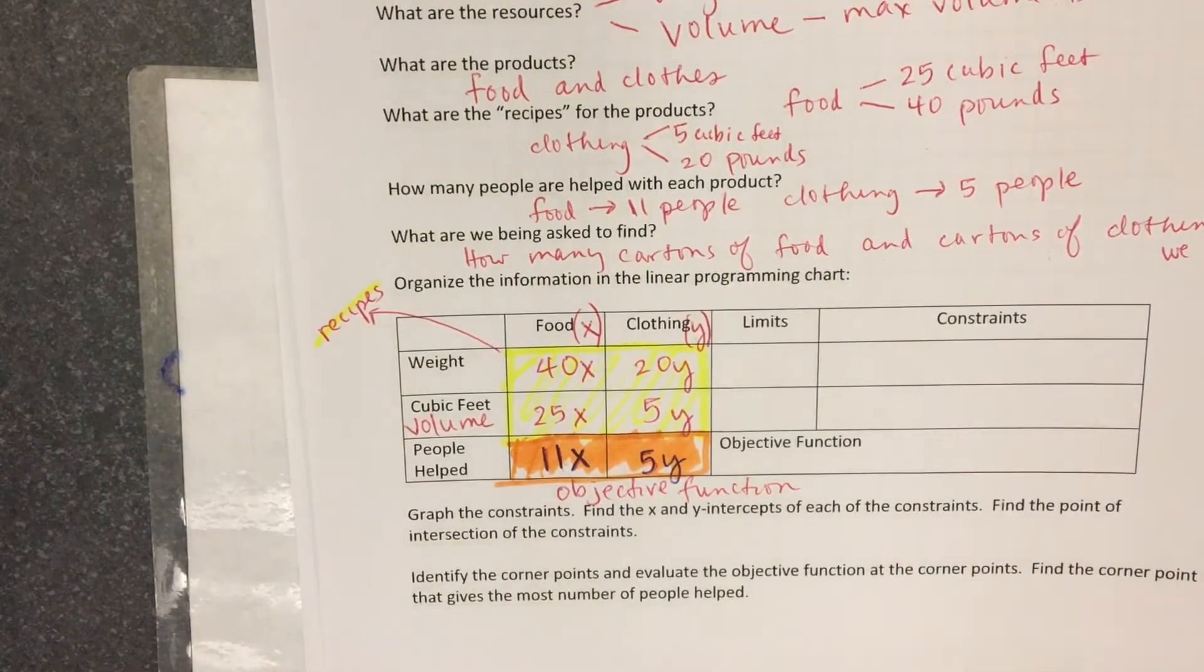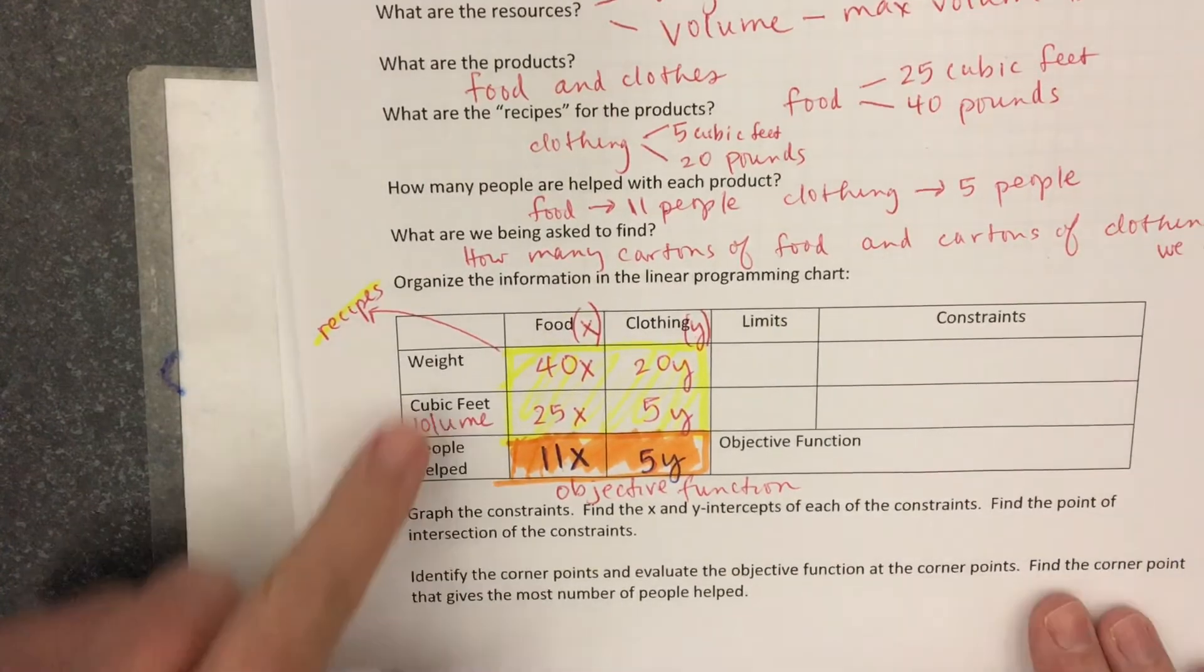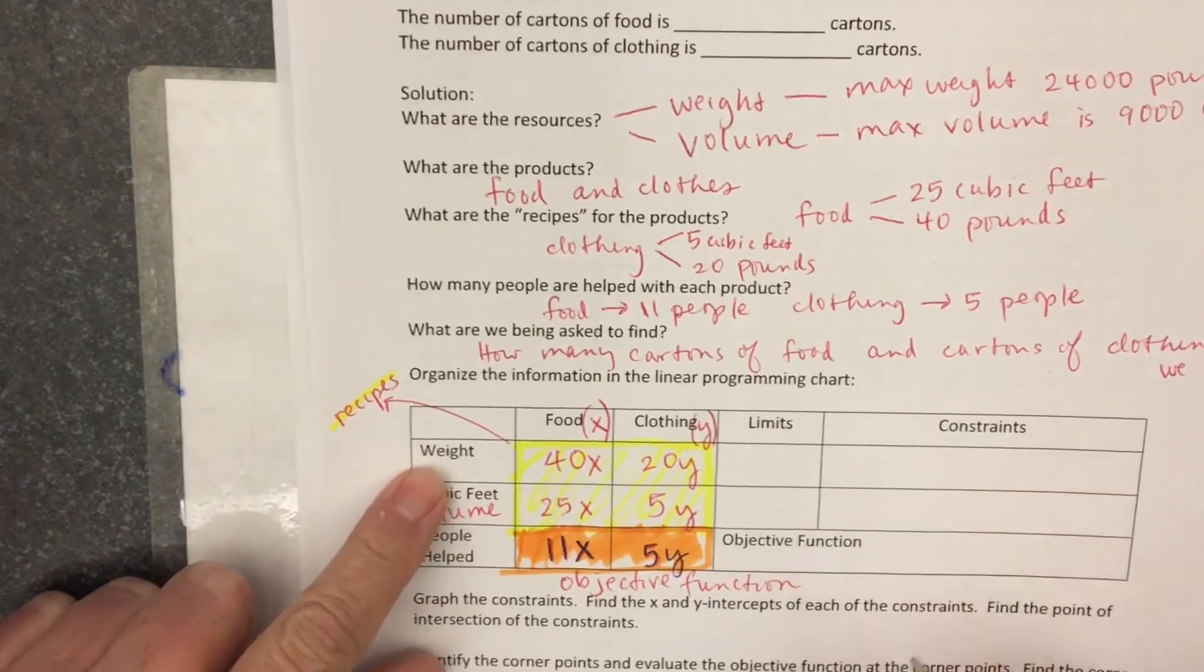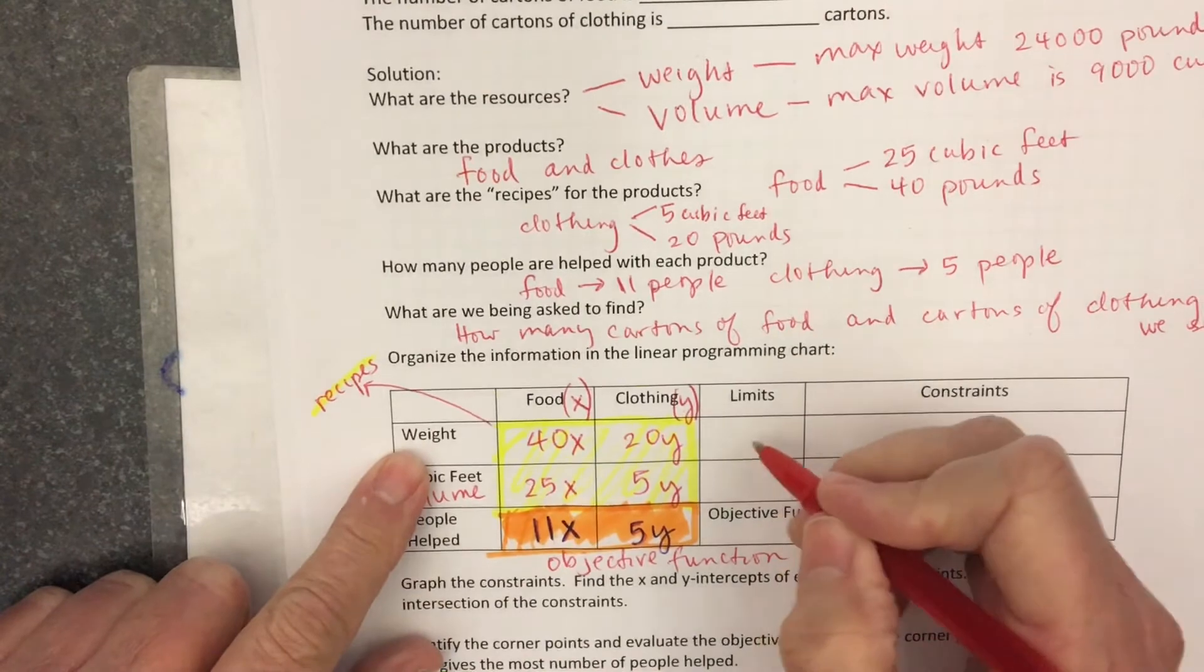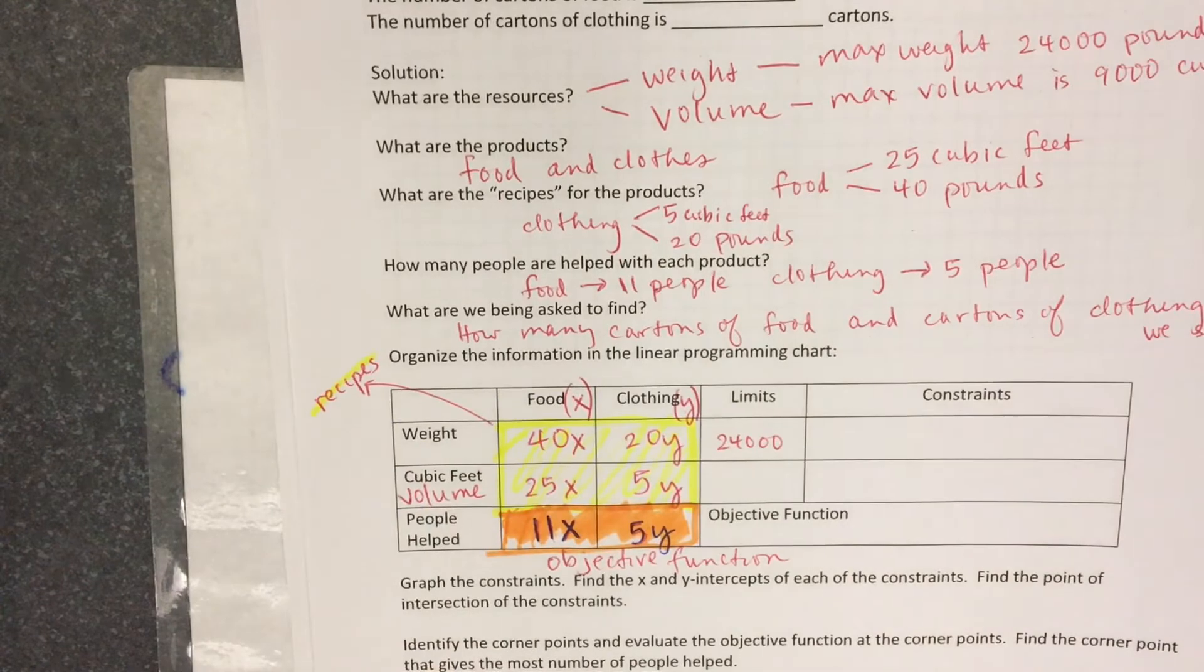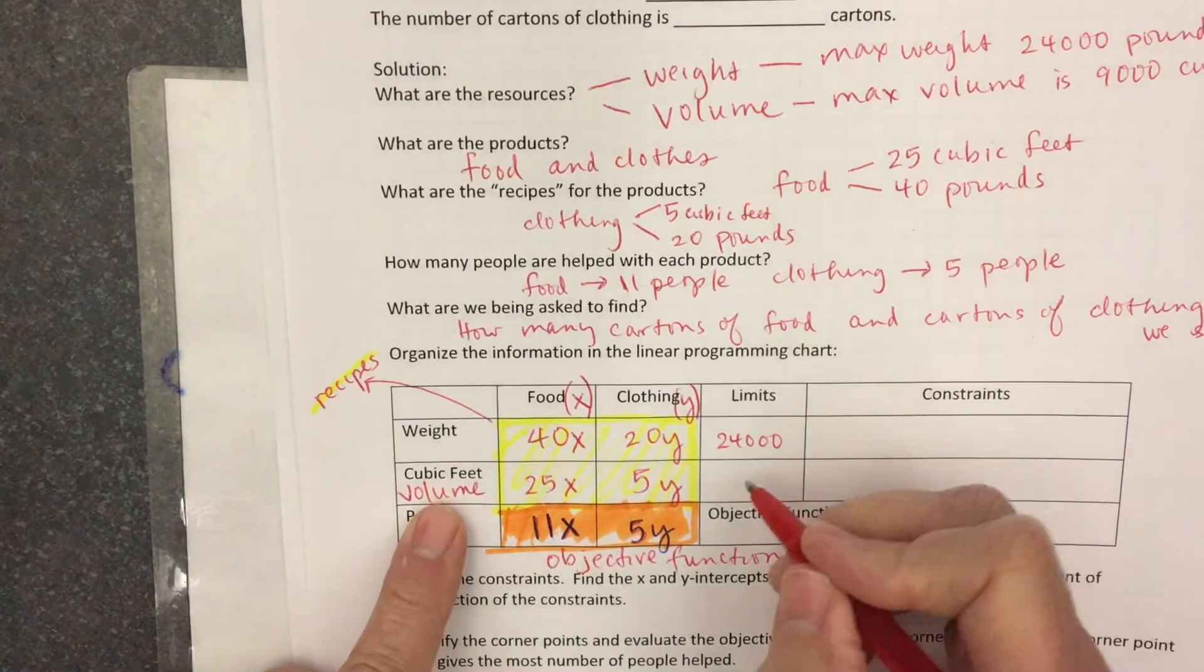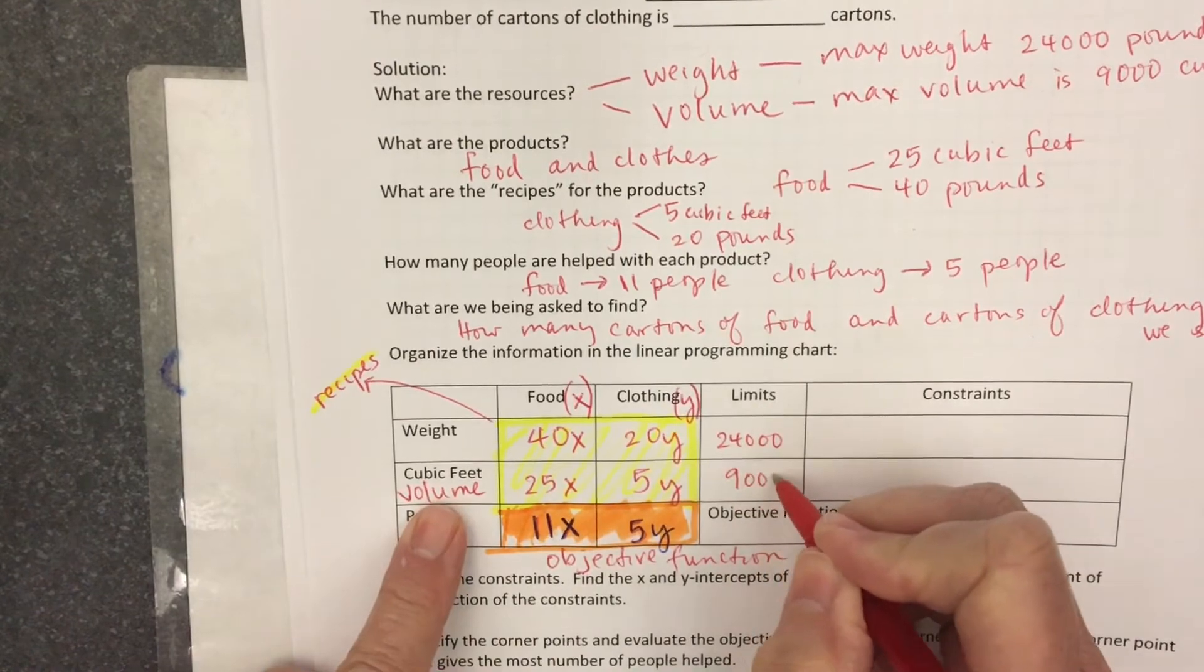The limits, that's the capacity of the airplane. What's the weight limit of the airplane? 24,000 pounds. Put that in the space for limits. Cubic feet of the airplane is 9,000 cubic feet.